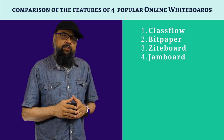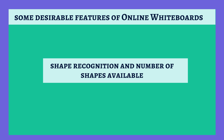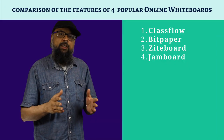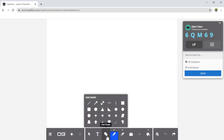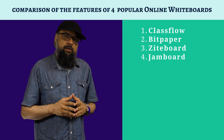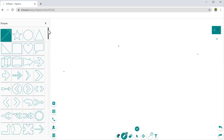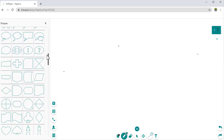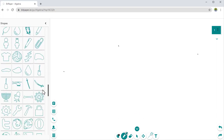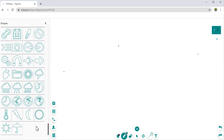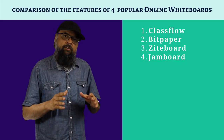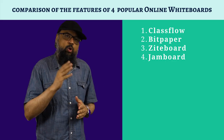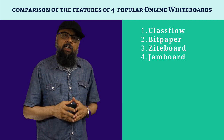The next desirable feature is shape recognition and the number of shapes available. In ClassFlow, there are a reasonable number of shapes to select from, which should be more than enough. But in Bitpaper, you have a huge library of shapes — more than enough for any practical application. So if shapes are critical for you, Bitpaper is a good choice. Shape recognition also depends on your own skills, which you will improve with practice.